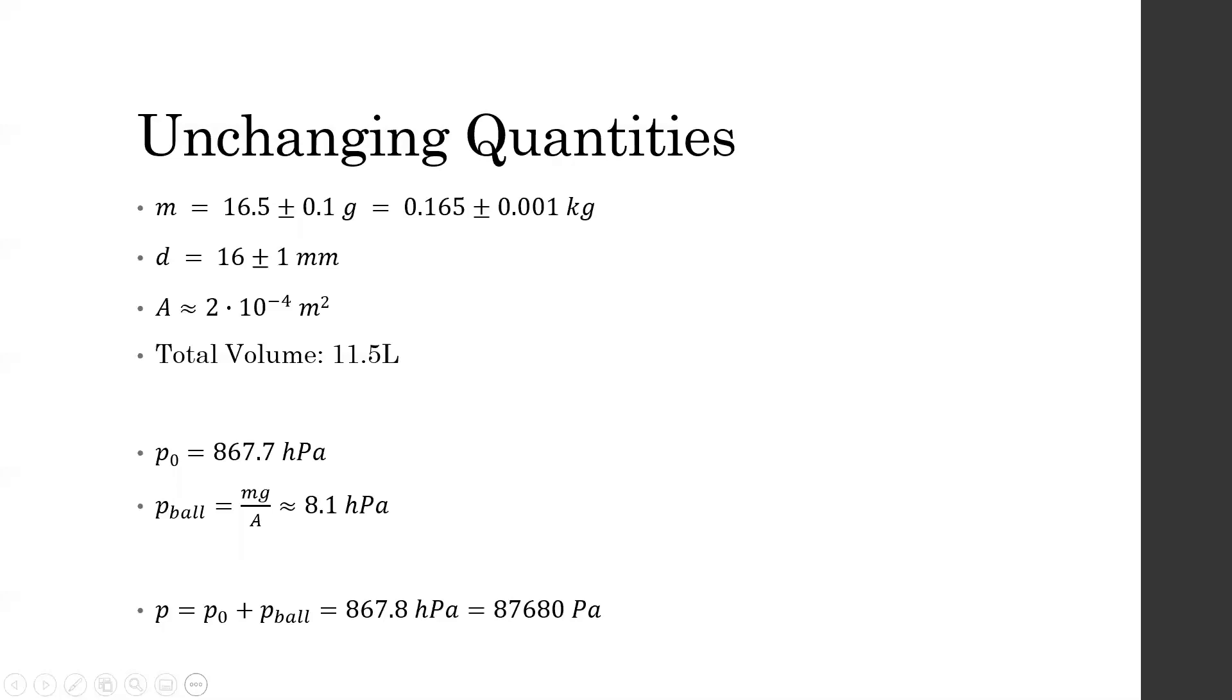The mass of the steel ball, area of the precision tube, and total flask volume are shown. The mass and area will be used to calculate kappa, and the total volume of the flask was needed to measure the volume of air the ball would oscillate on.